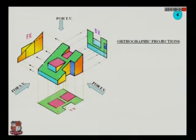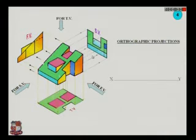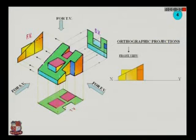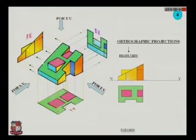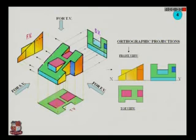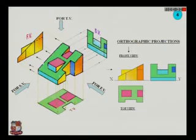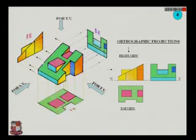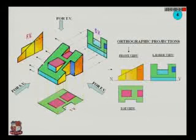In the orthographic projection, the front view comes above the XY line. We take projectors to draw the top view. Then, taking the projectors of the front view and top view with a 45-degree line on the XY line at any particular distance, we are able to draw the left-hand side view of this object.